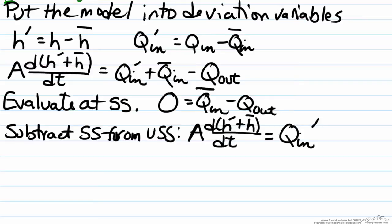Before we take the Laplace transform of this equation, we take advantage of the fact that h_bar is a constant, which means that dh_bar/dt is zero. So that leaves us with A dh'/dt equals Q_in'. So if we take the Laplace transform of this,